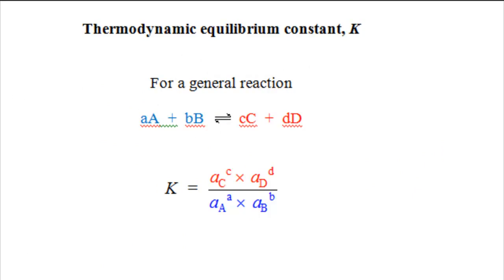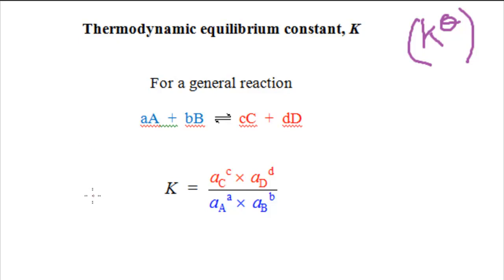Later in the book, in chapter 15, you will meet a third equilibrium constant: the thermodynamic equilibrium constant K, sometimes called the standard equilibrium constant. It takes the same form as Kc and Kp but is defined in terms of thermodynamic activities rather than concentrations or pressures. For the general reaction A plus B going to C plus D, italic A represents an activity — products on the top, reactants on the bottom, raised to the appropriate powers as before. Activities are defined in chapter 14 on page 685.